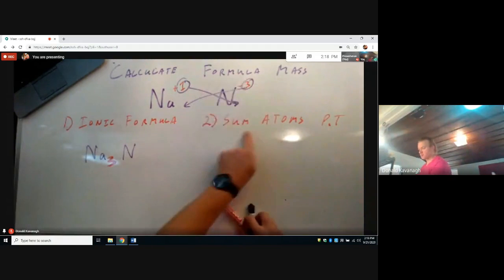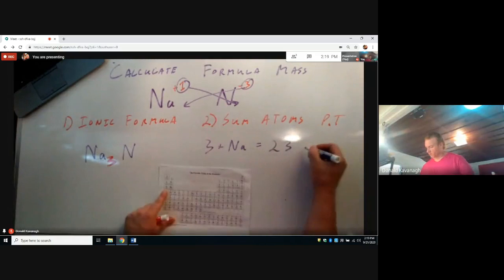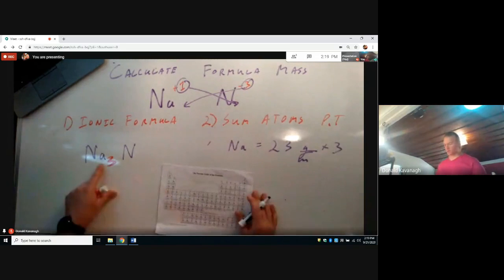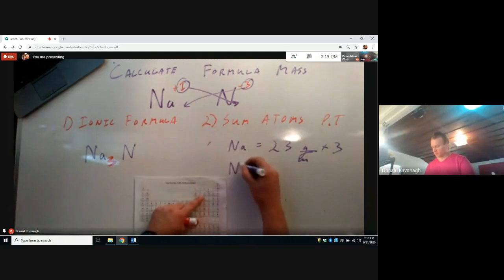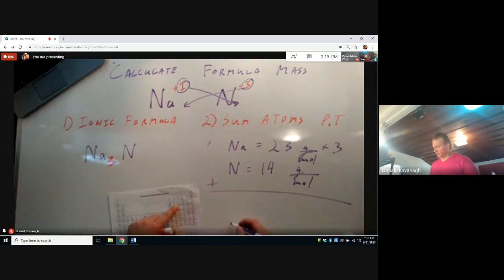The formula mass: we will sum the atomic masses off the periodic table. Sodium's atomic mass is about 23 grams per mole. I'm going to take that number and multiply it by three because there are three of them. Nitrogen is about 14 grams per mole, and there's only one of them. So multiply, add them all up, and that's the atomic mass in the units of grams per mole.